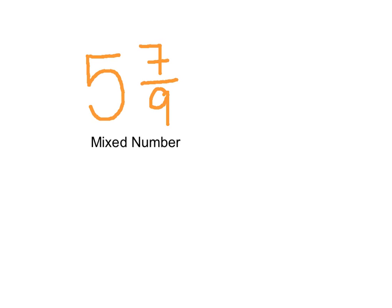When you have a mixed number with a fraction, you need to make sure that the fraction is in lowest terms. So looking at this fraction, I know that 7 ninths is in lowest terms, and I do not need to reduce it.